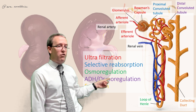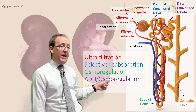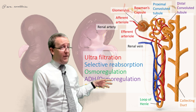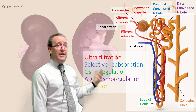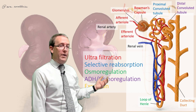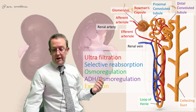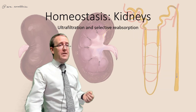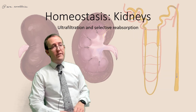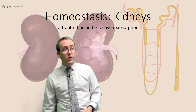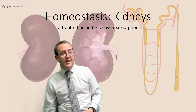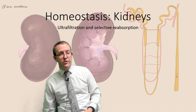Much of this you'll know from GCSE, including the names. Ultrafiltration is the really severe filtration that goes on in the glomerulus, and then selective reabsorption happens in the proximal convoluted tubule, and eventually you get excretion. The new bits that A-level students struggle with most are osmoregulation and the ADH sections that happen in the loop of Henle and the distal convoluted tubule — more on those in a subsequent video. That's the basics of our anatomy — video two will cover ultrafiltration and selective reabsorption. Thank you very much.